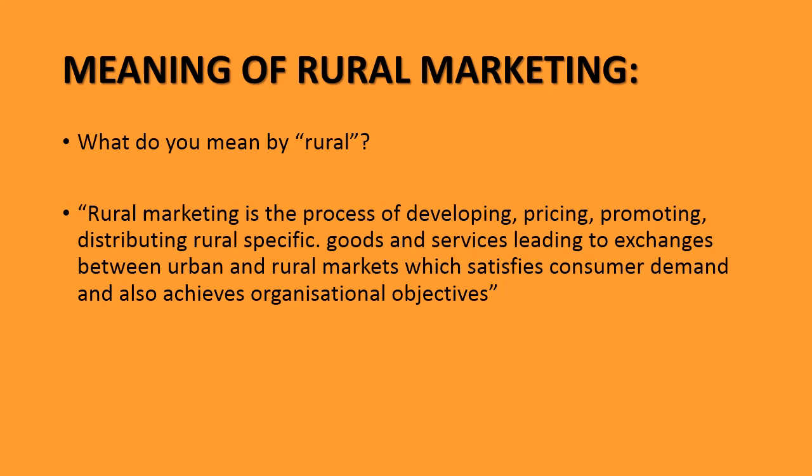Rural marketing is nothing but developing a product by keeping in mind the demands of rural consumers, and then promoting, pricing, and distributing them. The exchange of goods and services between urban and rural areas works both ways — from rural areas, food grains, vegetables etc. are supplied to urban markets, and from urban markets, finished products and FMCG products etc. are supplied. According to one survey, the rural population currently accounts for one third of the total Indian FMCG sales, which is quite significant. So the rural market in India is very wide, specifically in FMCG products and markets.